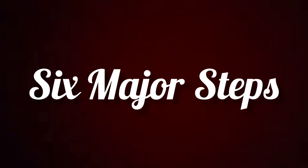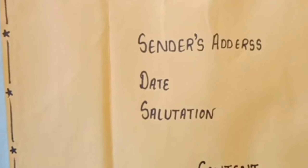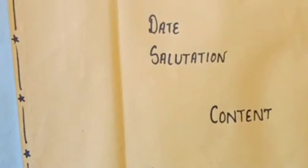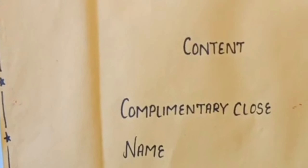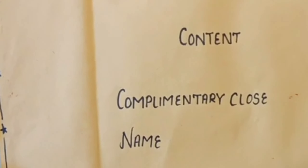And in the informal letter, there are six major steps to write the informal letter. First, we should write the sender's address, which is basically our address. And after that, we have to write the date. And the third step is salutation. After that, we have to write the content. And after that, we have to write the complimentary clause. And after that, we can write the name.